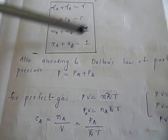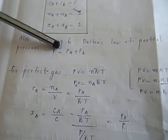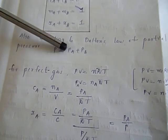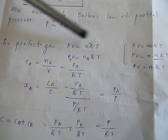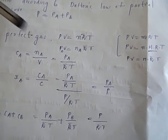If we are considering Dalton's law of partial pressure, the total pressure is the summation of pressure of A plus pressure of B. For a perfect gas, we know that PV is equal to nRT, where R is a universal gas constant.